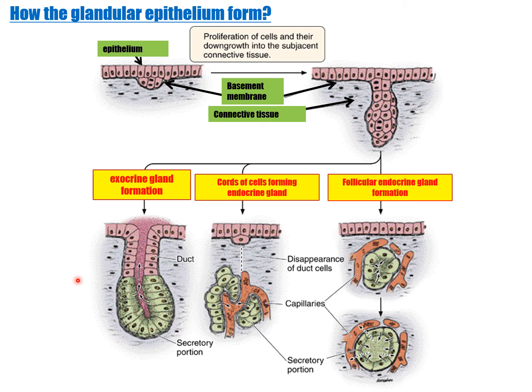The general features of glandular epithelium: glands originate from specialized secretory epithelial cells that leave the surface and develop into the underlying connective tissue, forming a basal lamina around them. Glandular epithelium is formed by cells specialized to form secretion. Secretory molecules are stored in small membrane-bound vesicles called secretory granules. Glandular cells may synthesize, store, and secrete proteins, lipids, or carbohydrate-protein complexes.